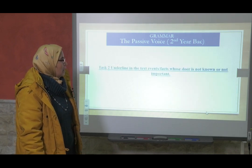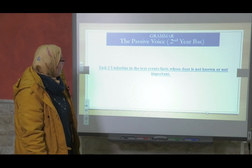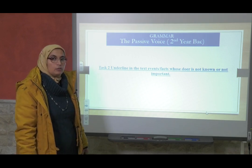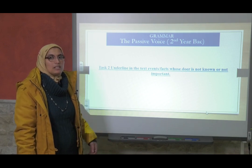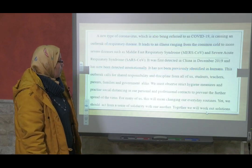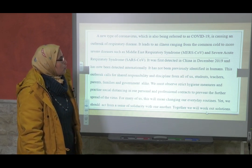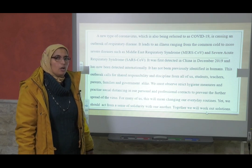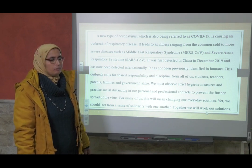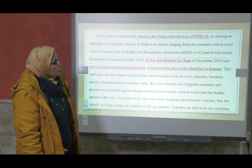Now task number two. What are we going to do with this text about coronavirus? We will underline in the text events and facts whose doer is not known or not important. Doer — agent — someone who does something, that is the subject sometimes. A new type of coronavirus, which is also being referred to as COVID-19. Who refers to it as COVID-19? Do we know? Is it important to know? Here we don't know who is the doer.